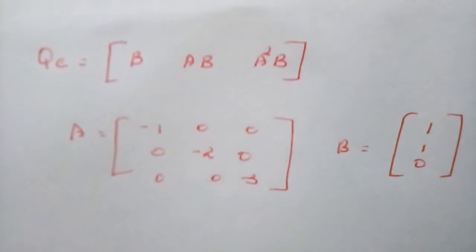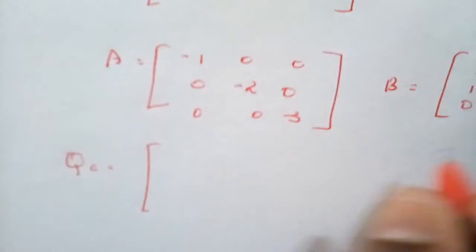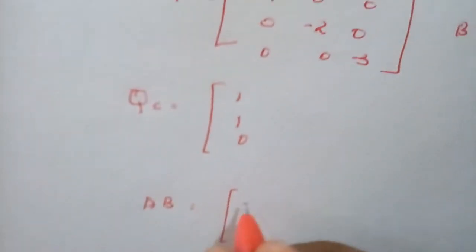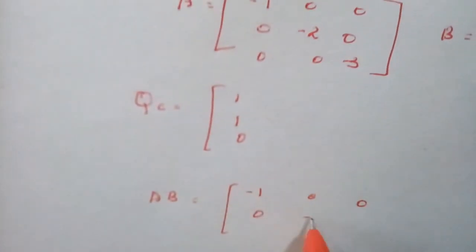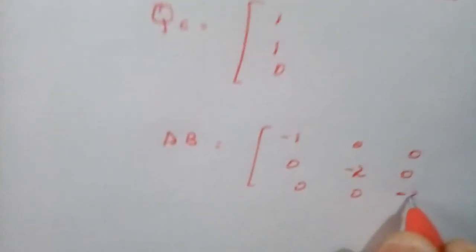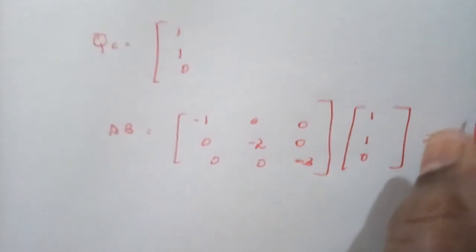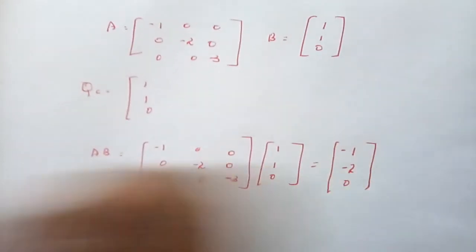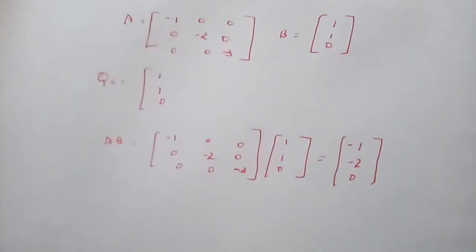Starting to fill the QC value: first we know B = [1, 1, 0]. Then we compute AB by multiplying A = [-1, 0, 0; 0, -2, 0; 0, 0, -3] with B = [1, 1, 0]. By cross-multiplying, I get AB = [-1, -2, 0]. So minus 1, minus 2, and 0.